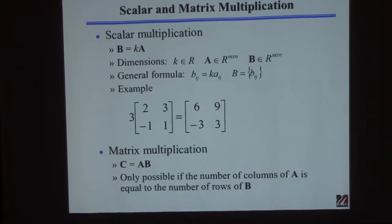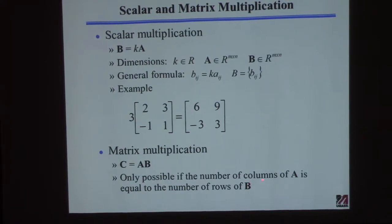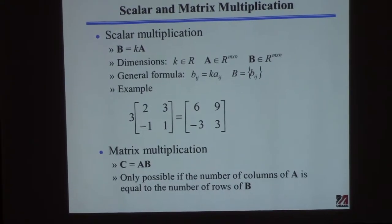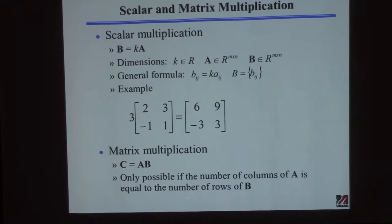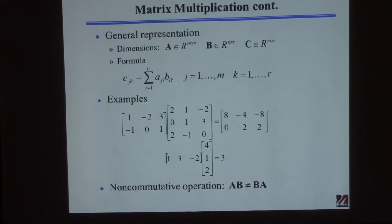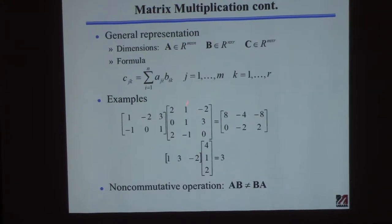You can't just take an arbitrary matrix A and multiply times an arbitrary matrix B because they won't have the right dimensions. If you try to do it in MATLAB, it gives you an error message saying the dimensions are not consistent. So the number of columns of A has to equal the number of rows of B. Let me go through two examples and then the definition.